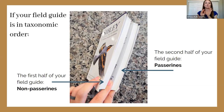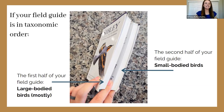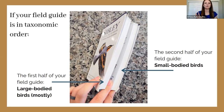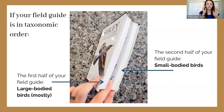If you're trying to identify a bird, knowing which half of your guide to flip to is that first narrowing-down step. Generally, larger-bodied birds will be in the front half with non-passerines, and smaller-bodied birds in the back half with passerines. Exceptions include woodpeckers and hummingbirds, which are not passerines despite being small — they'll be closer to the middle of your guide.